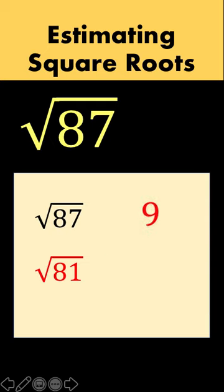And then you get the difference between 87 and 81, and you get a value of 6. Take that as your numerator and divide this by twice this 9. So double this 9 to get 2 times 9, 18. And 6 over 18 is 1 third, and so this is equal to 9.33.